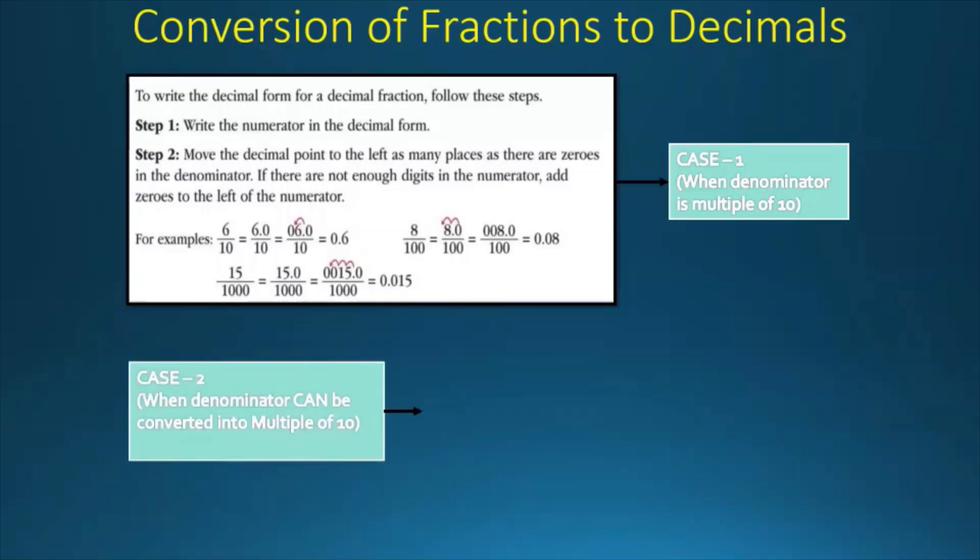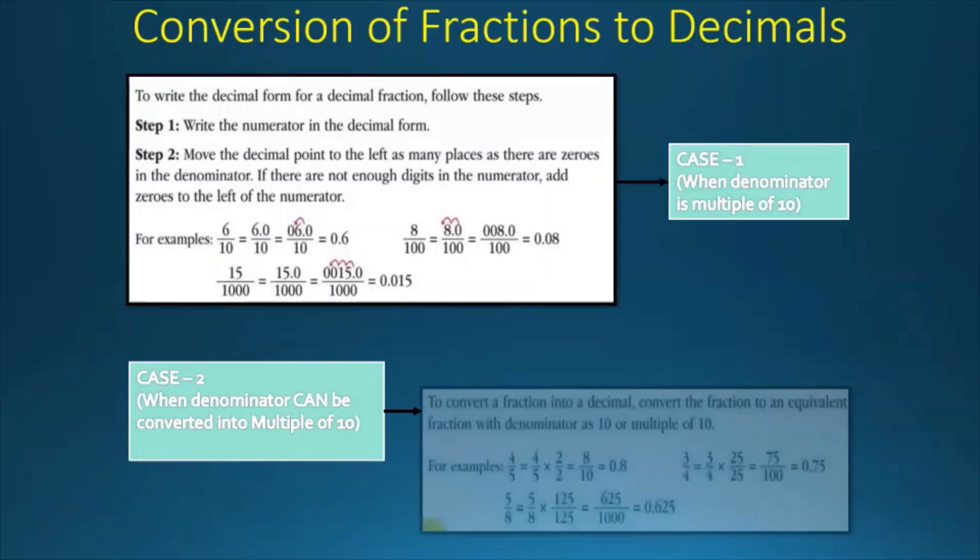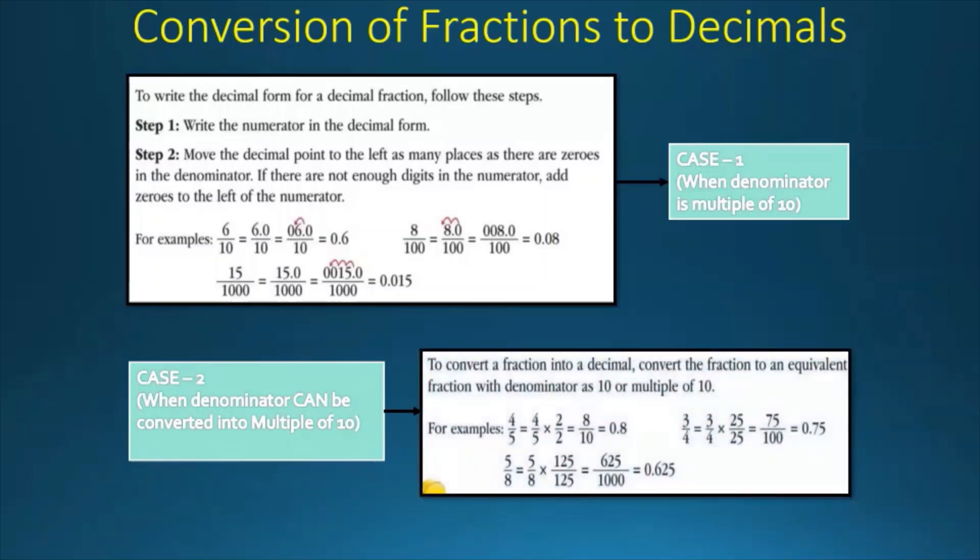Case 2 is when the denominator can be converted into a multiple of 10. To convert the fraction into a decimal, we have to first convert the fraction into an equivalent fraction with the denominator as 10 or a multiple of 10. For example, 4 by 5 is equal to 4 times 2 by 5 times 2, which is equal to 8 by 10.